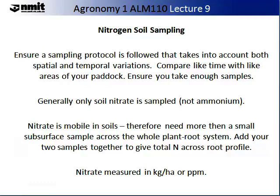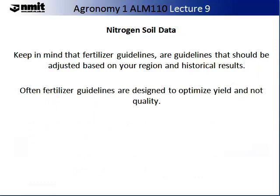You need to attain your soil from across your soil profile. Soil augers are useful for this type of soil assessment. If you take soil samples from shallower and deeper root profiles, ensure that you add the concentrations together to give you the total nitrogen across your root profile. Nitrate tends to be measured in either kilograms per hectare or parts per million. Use the information from the soil data to establish fertiliser regimes for your paddocks, bearing in mind that fertiliser guidelines are only guidelines and should be adjusted to your region and historical results.